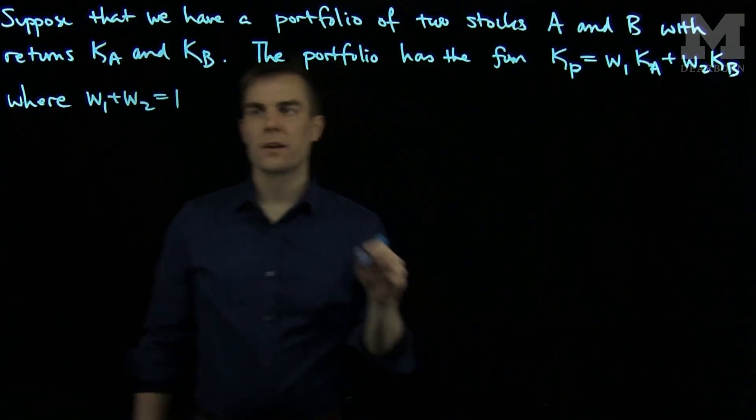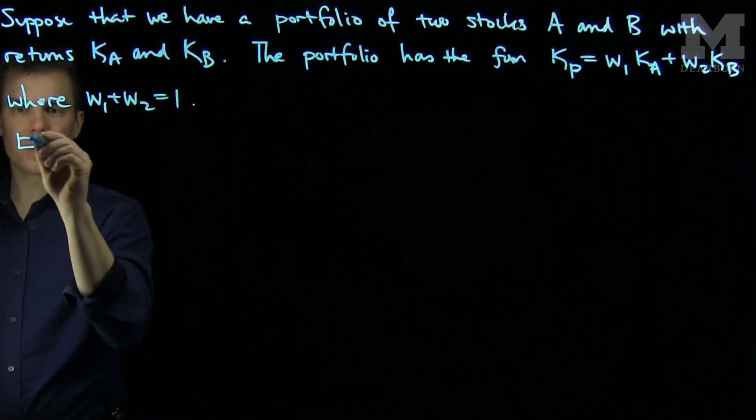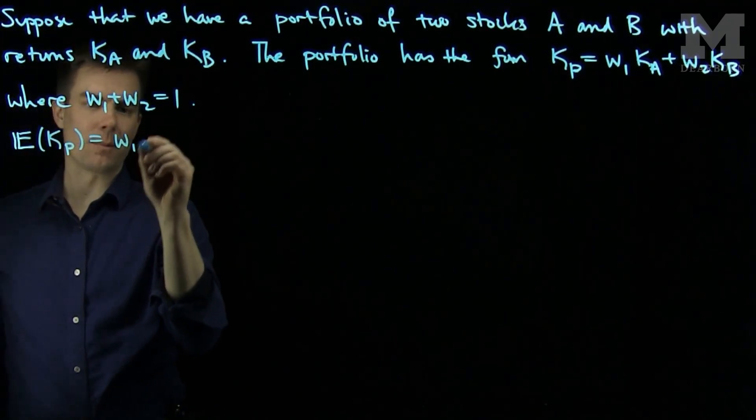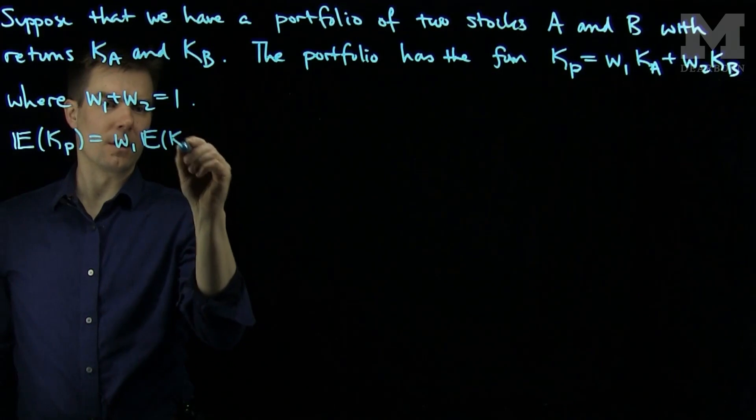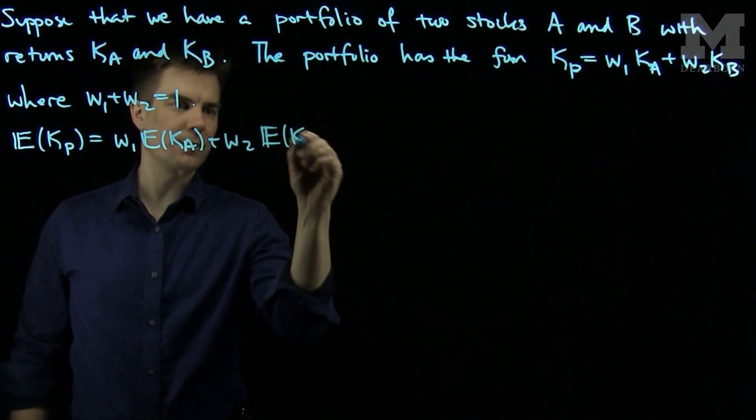So we can find the expected value and the risk. The expected return on the portfolio is a linear combination of the expected value of the returns on the individual stocks by the linearity of the expected value.